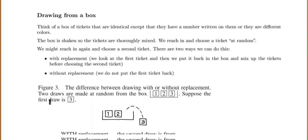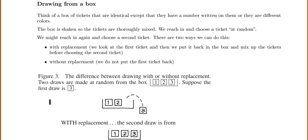Now we're going to talk about drawing from a box, which we do a lot in this class. Think of a box of tickets that are identical except for having a number or color. The box is shaken so tickets are thoroughly mixed. We can draw with replacement — meaning we look at the first ticket then put it back before choosing the second — or without replacement, meaning we don't put the first ticket back.